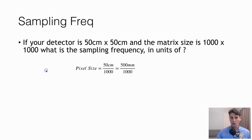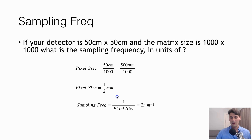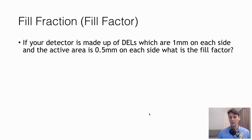The pixel pitch: we have 50 centimeters, which is 500 millimeters, and we divide that by 1000. So the pixel pitch is 0.5 millimeters. The sampling frequency is one over that — one over one-half — which is 2, and the units are inverse millimeters. The next thing we want to talk about is fill factor.